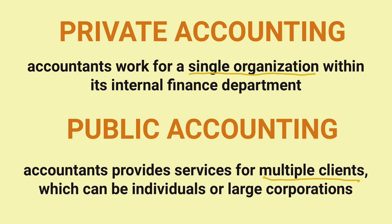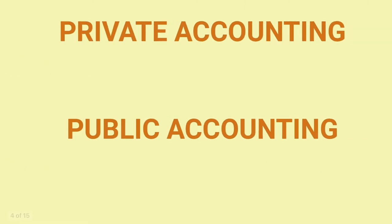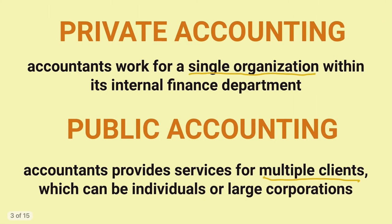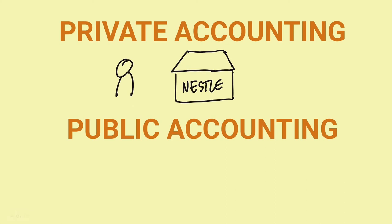To further understand this, let's give some examples. An example of private accounting is when an accountant is directly working for, let's say, Nestle, and they work in the internal accounting support of the company. Going back to the definition, they work for the internal finance department and only for a single organization. For example, this accountant works specifically under the accounts payable department, and that accountant is only working for one company.